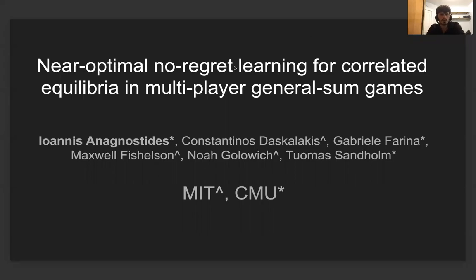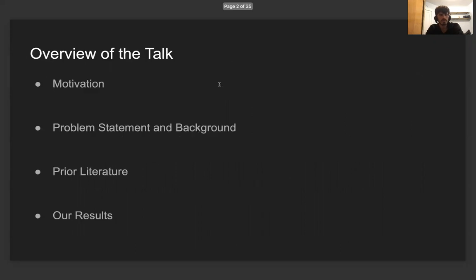Hello to everyone. In this talk, I'm going to describe our paper titled 'Linear Optimal Non-Regret Learning for Correlated Equilibria in Multiplayer General Sum Games.' Let me first give a brief sketch or an overview for the talk. First, I will describe the basic motivation, then I will formally introduce the problem as well as some background, then we're going to discuss some of the prior literature, and finally we're going to dive into our own results.